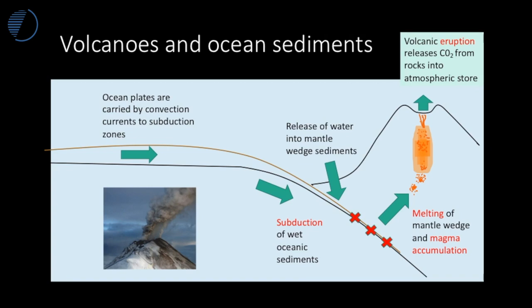You might be thinking: if so much carbon is building up in the seafloor, how does it get back into the atmosphere? The answer is plate tectonics. Some plates are pulling apart, some are converging. Here we have a subduction zone where an oceanic plate is being subducted underneath a continental plate, with convection currents carrying the plate down into the mantle.